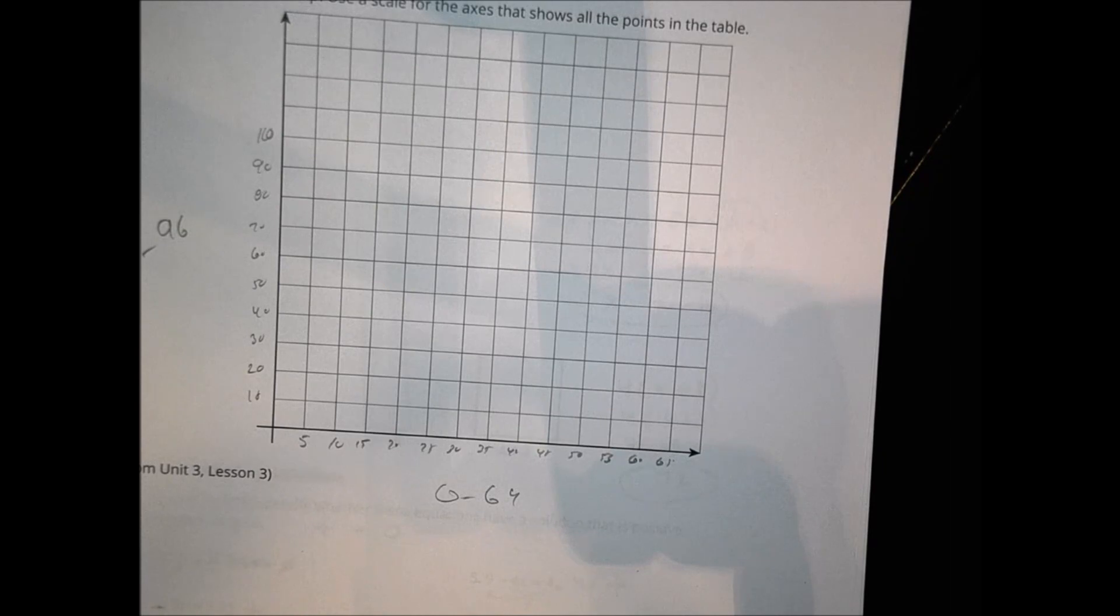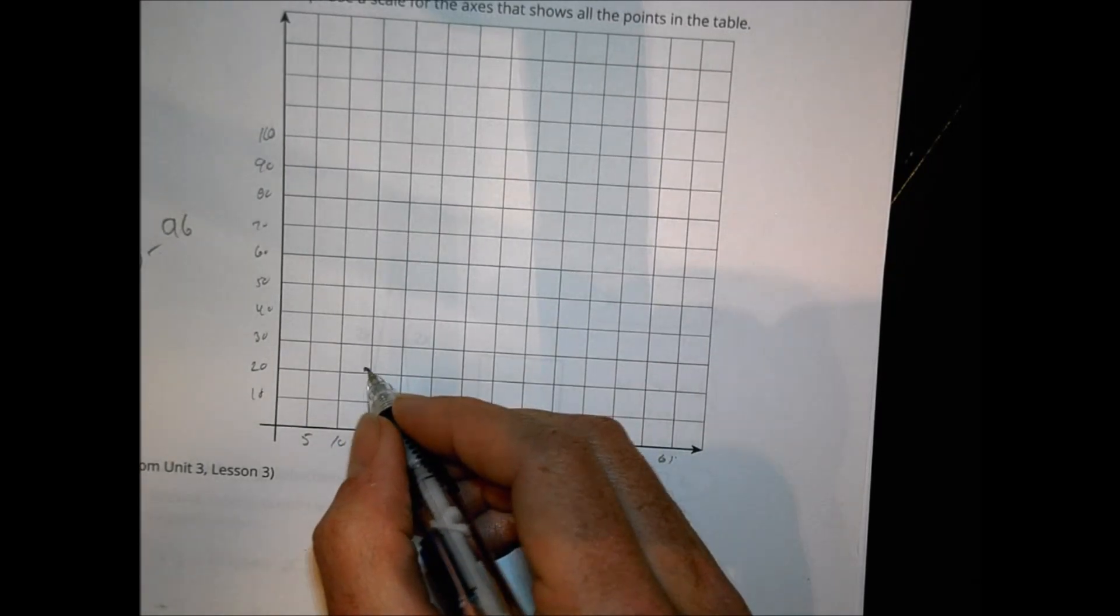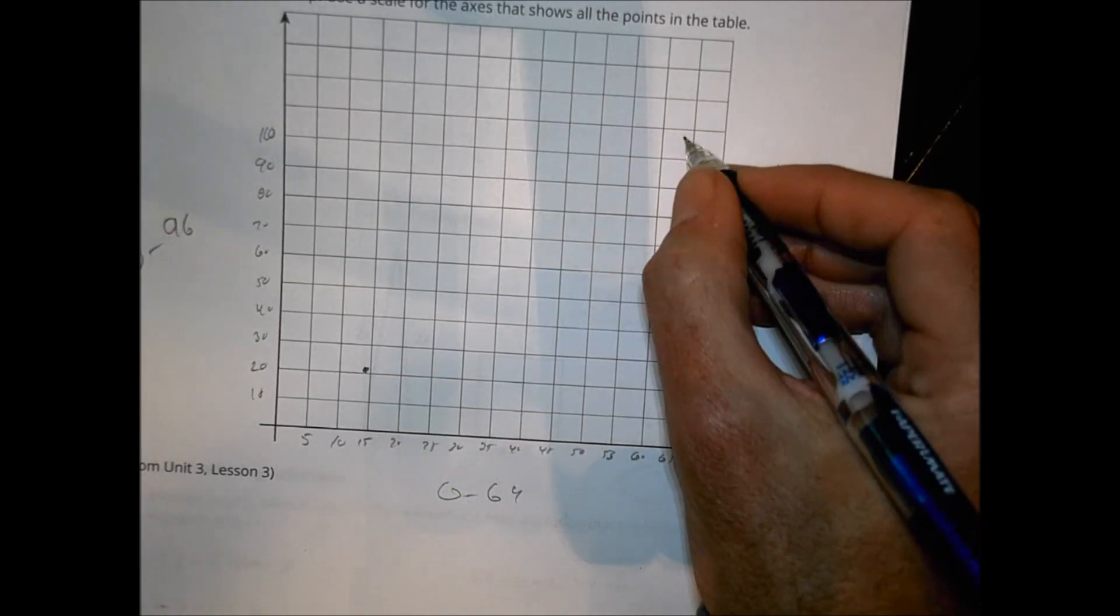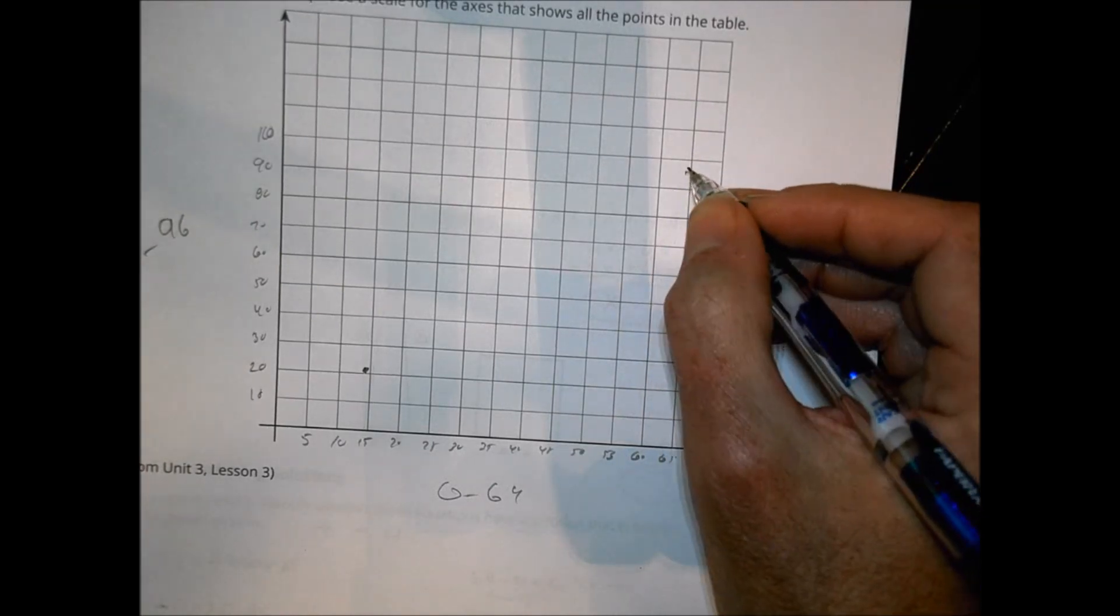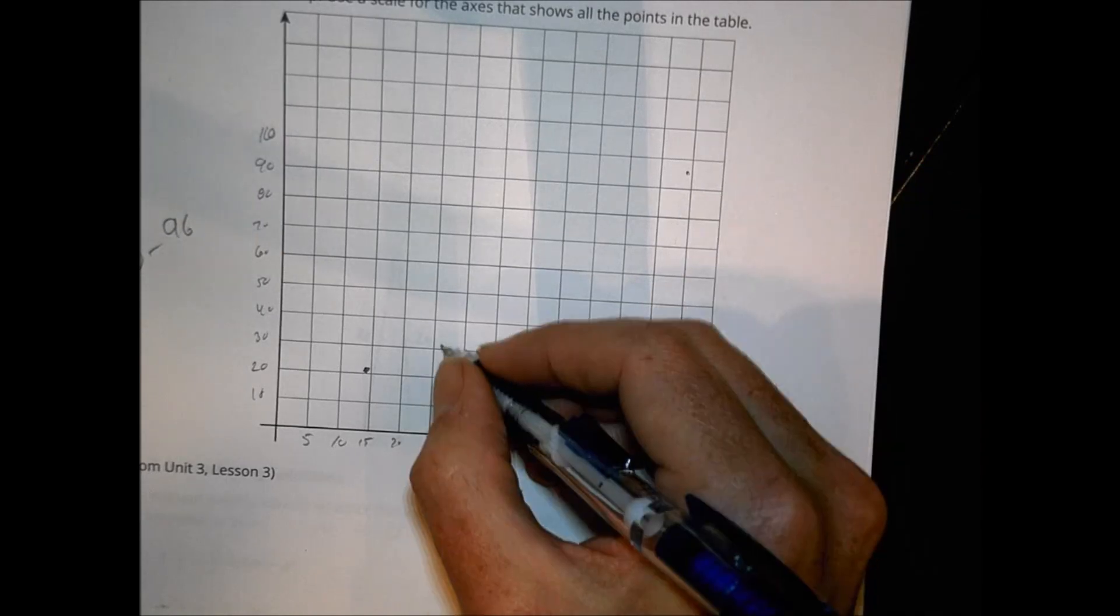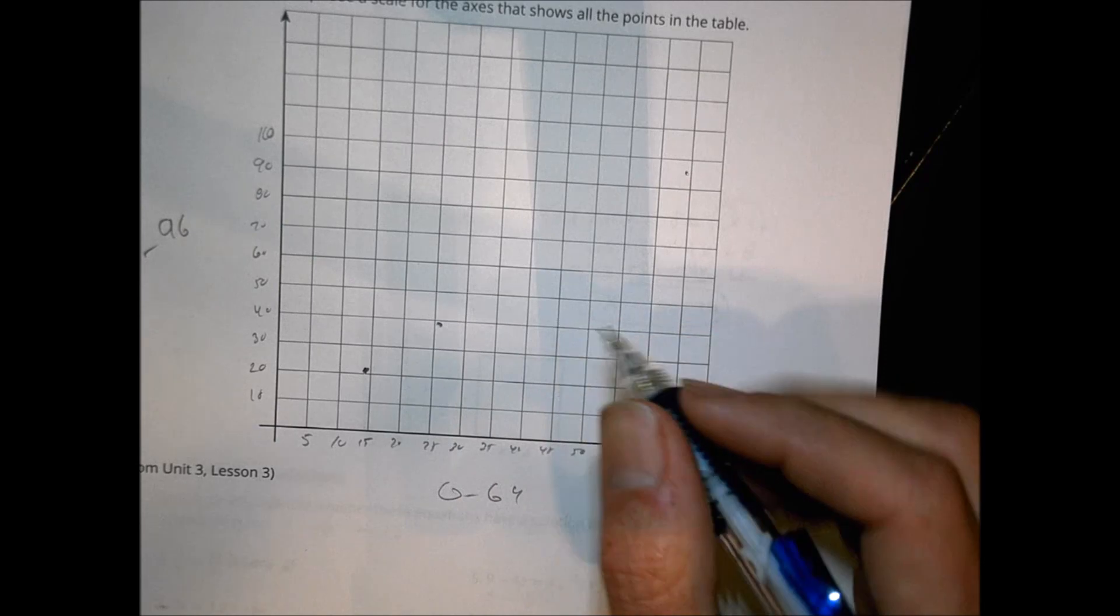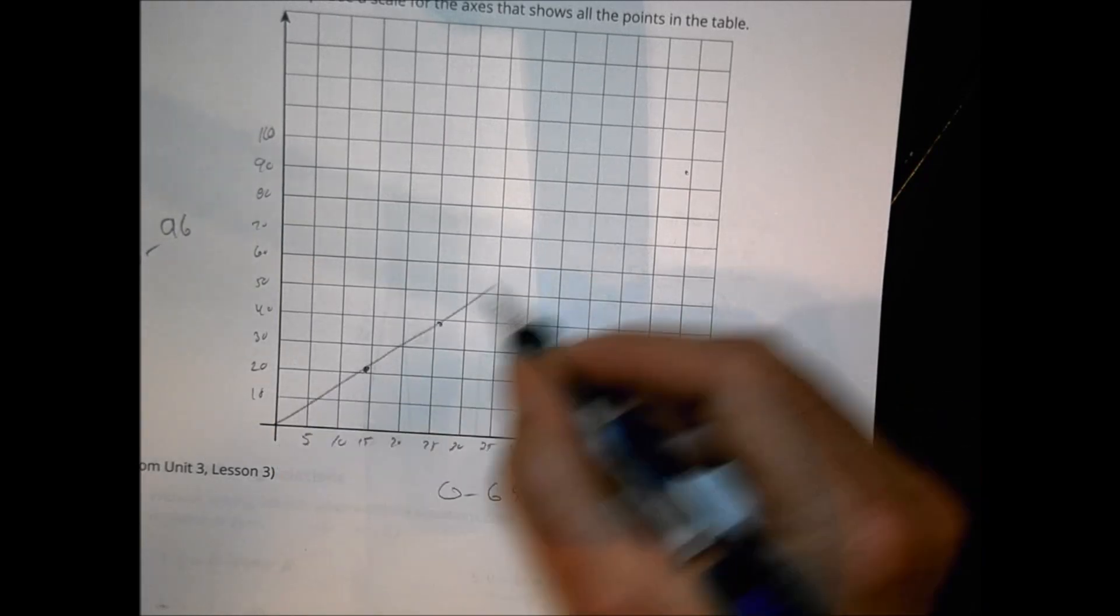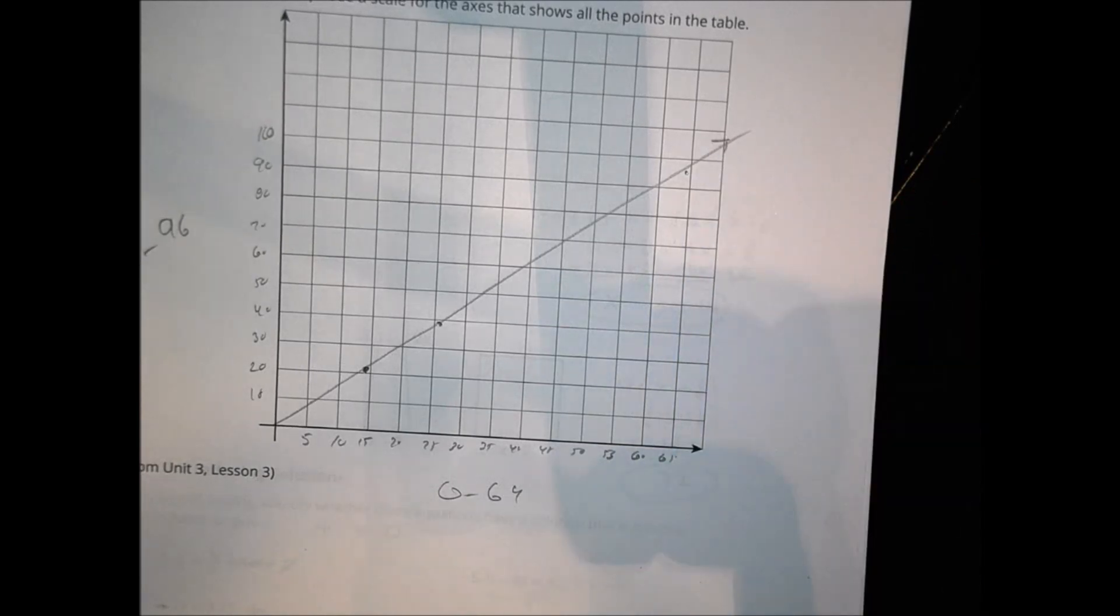So then looking back at the values that we had, one value I had was 14 and 21. So here's 14 and 21 is somewhere about here. We also had 64 and 96. So that's going to be somewhere about here. 64, 96. We have 26 and 39. 26 and 39, which is somewhere about here. And that's what we had. We know it's proportional. So let's go through the origin. So it should look something like that. And that's what we have going along there. And that becomes our graph for that problem.